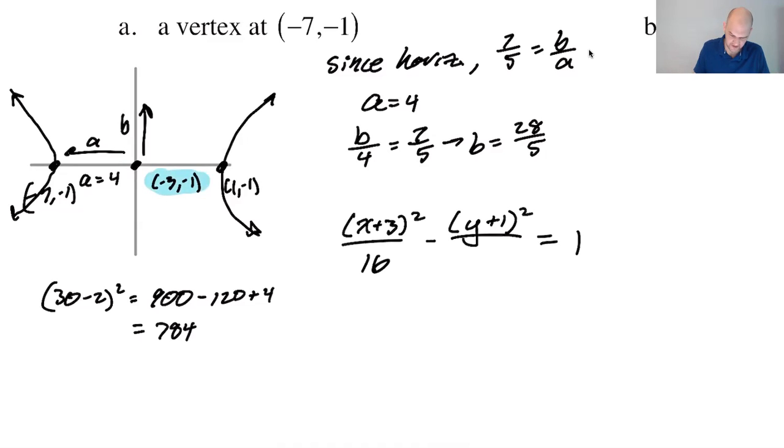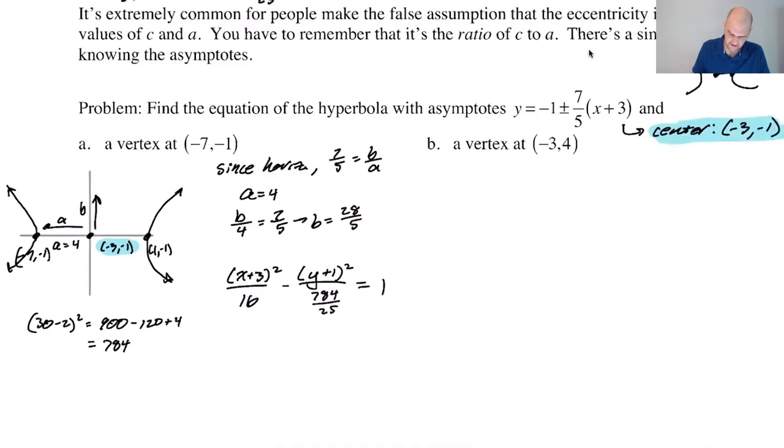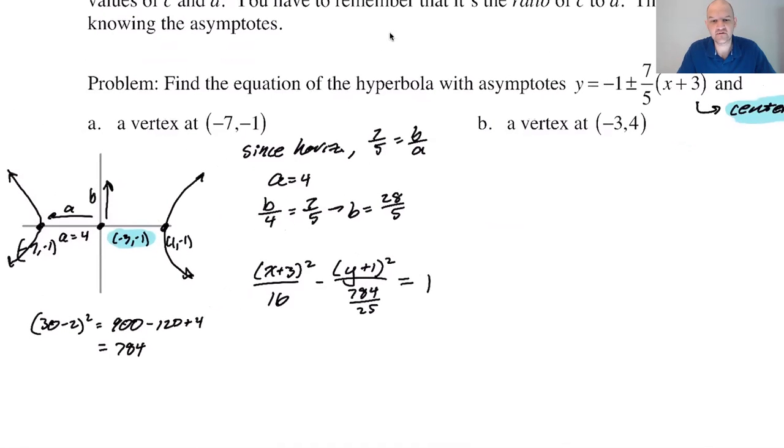And then B I think is 784 over 25 and we can check it. So let's go to the calculator. I'm going to check this.